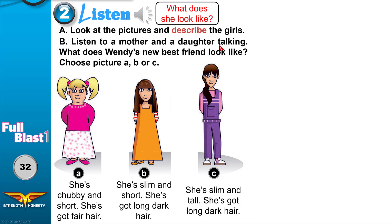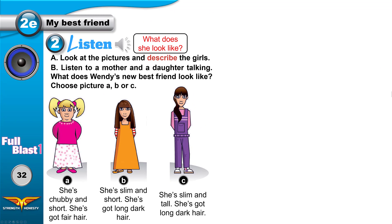Now listen to a mother and a daughter talking. What does Wendy's new best friend look like? Wendy is the daughter. Which of these girls is Wendy's friend — choose picture A, B, or C. Now listen: what does Wendy's new best friend look like? Choose picture A, B, or C.